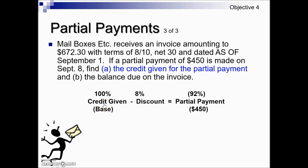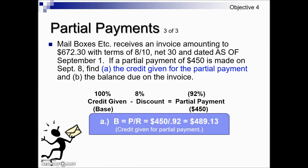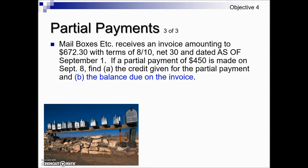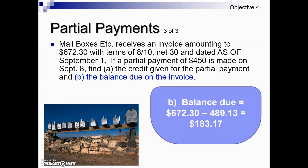Using the partial payment relationship — credit given less the discount equals the partial payment — 100% minus 8% gives us 92%. The partial payment of $450 is our part and 92% is our rate. Base equals part divided by rate, so the credit given for this partial payment is $489.13. For the balance due, we take the original invoice amount of $672.30 and subtract the credit of $489.13, giving a remaining balance of $183.17.